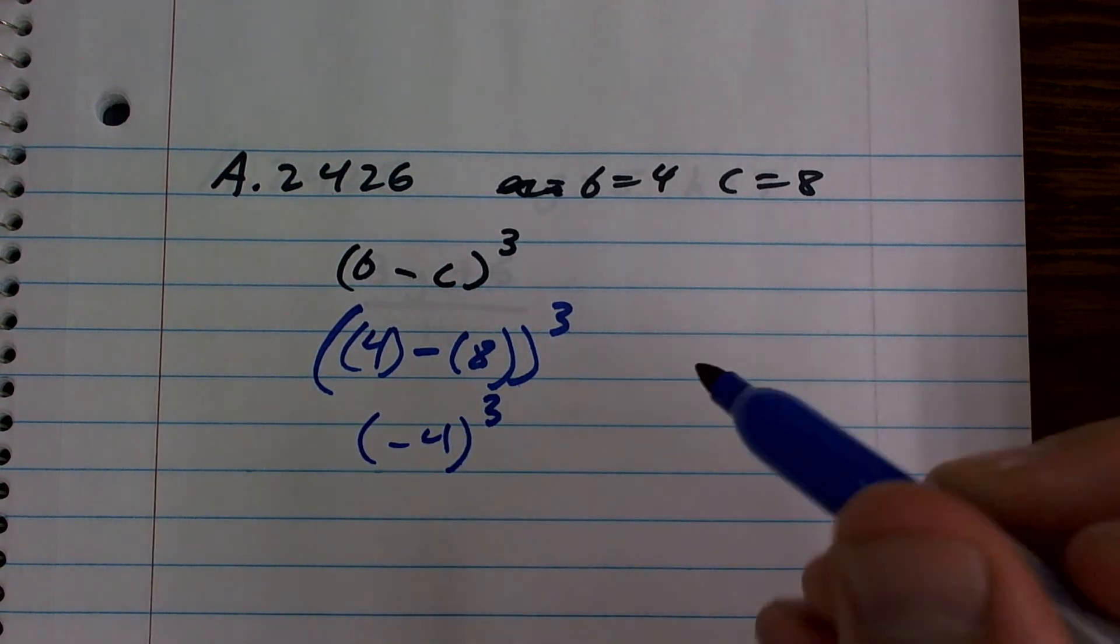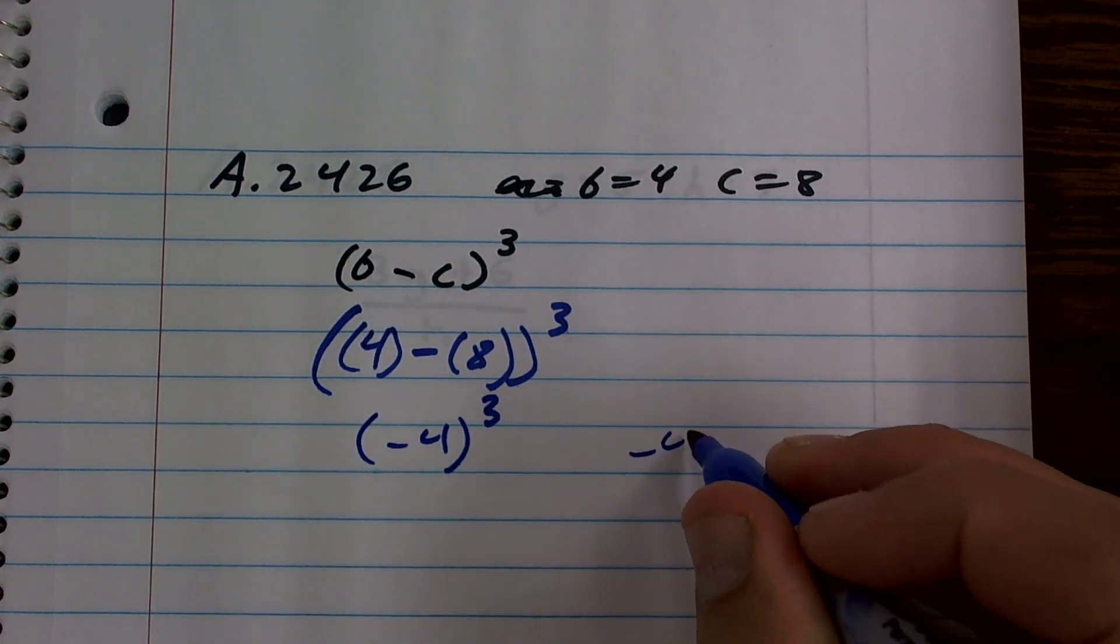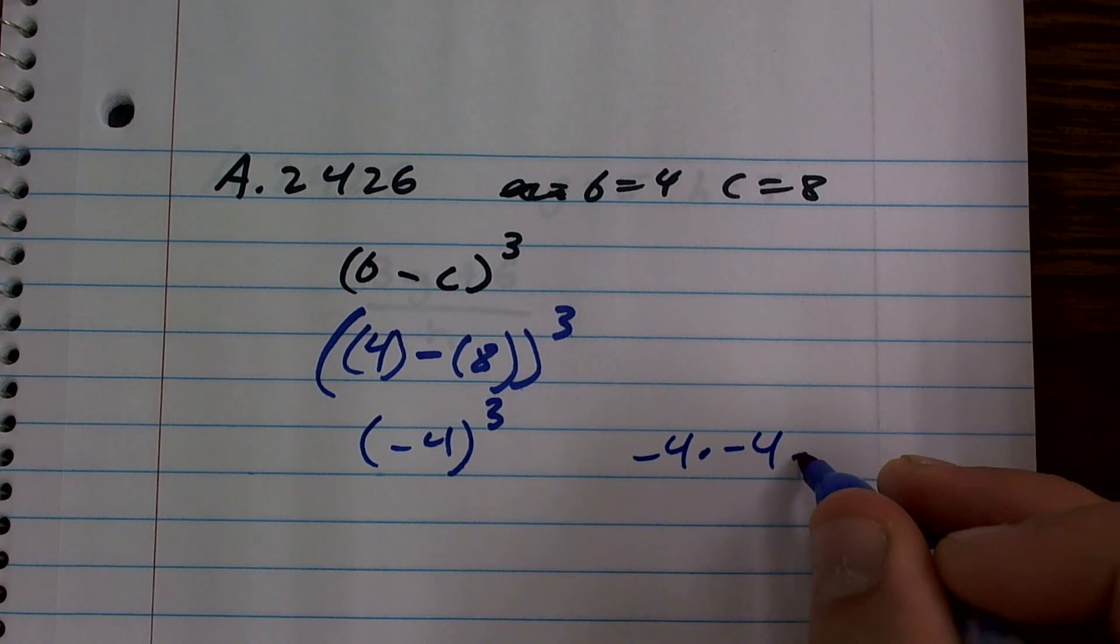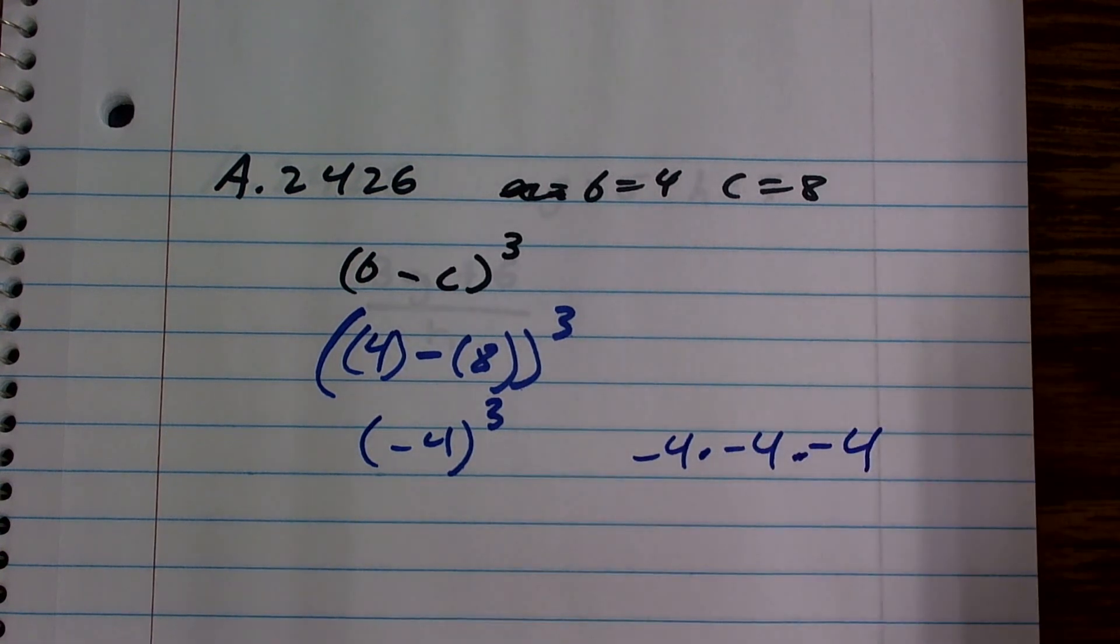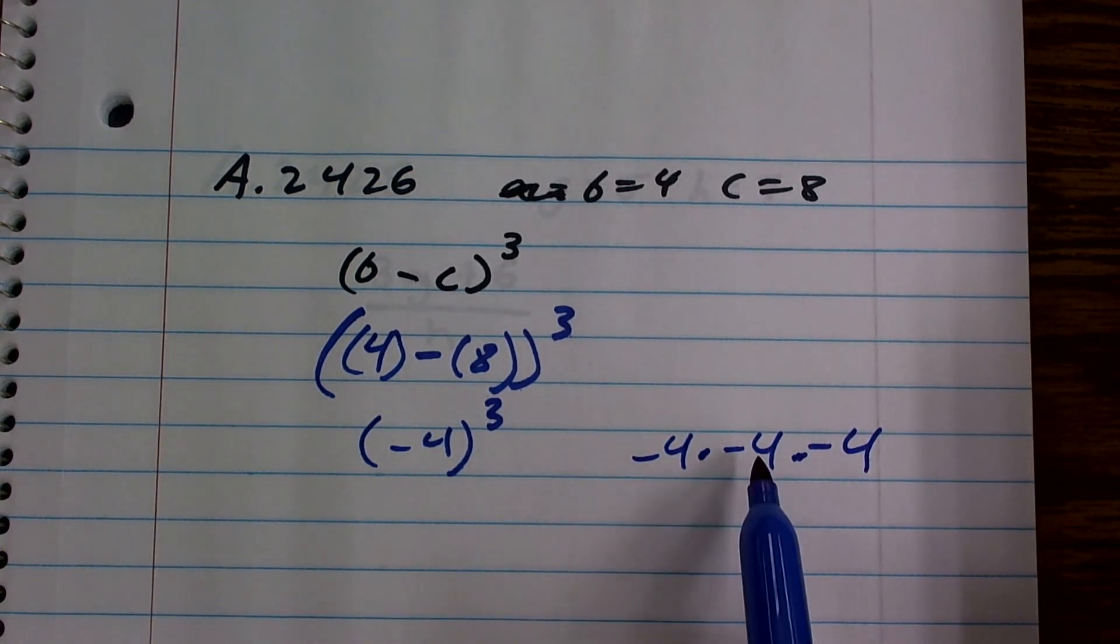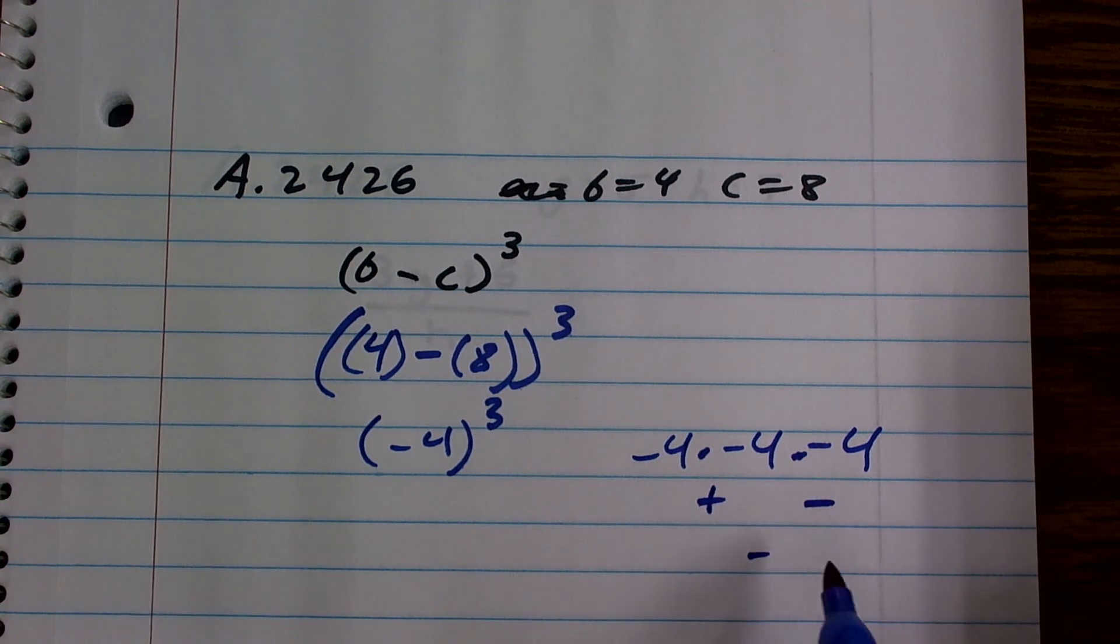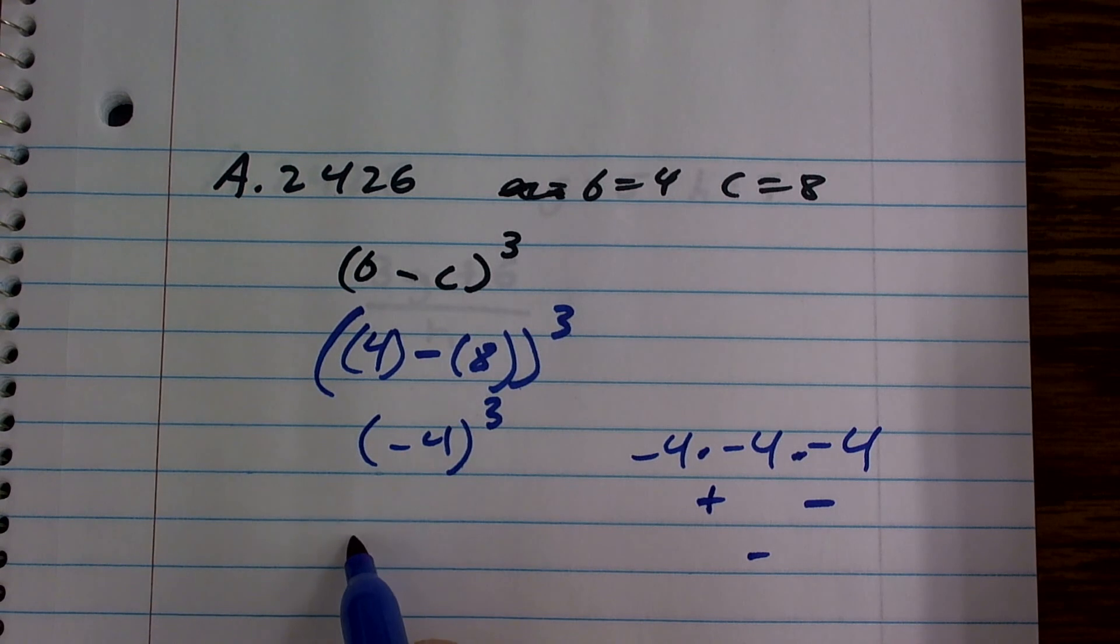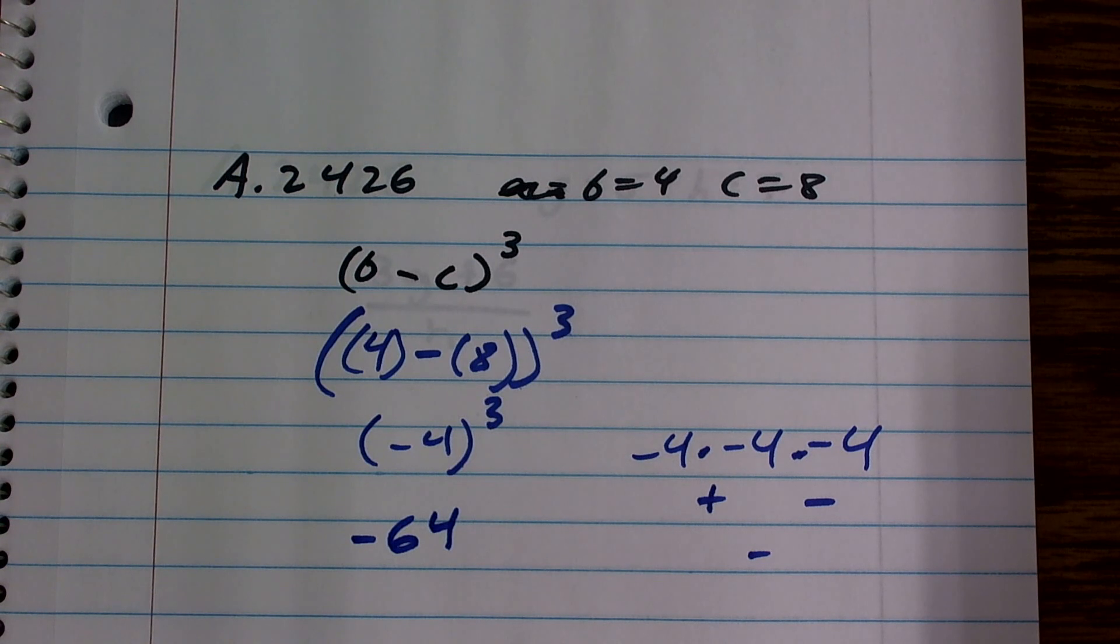Negative 4 cubed. Remember, negative 4 cubed means negative 4 times negative 4 times negative 4. All right? So therefore, negative times negative is going to give me a positive, but then times negative is going to leave me a negative number. So negative 4 cubed is going to leave me a negative 64 as you work out the math on your own. Right? Yeah.